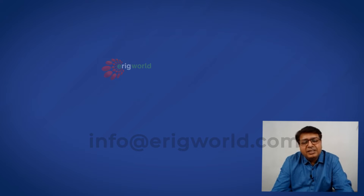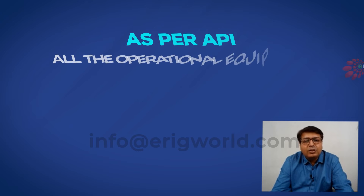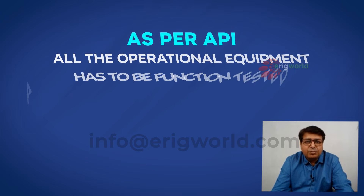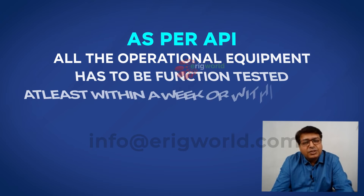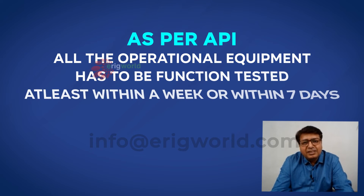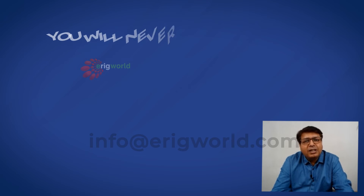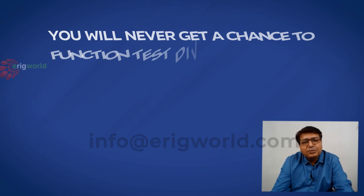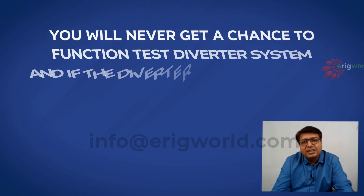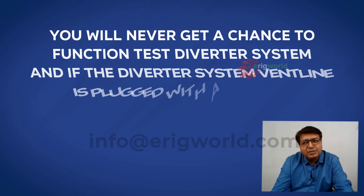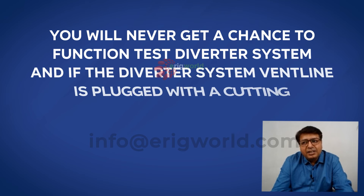As per API, all operational equipment has to be function tested at least within a week, or within seven days. However, you will never get a chance to function test the diverter system within that window given how short the tophole section is.